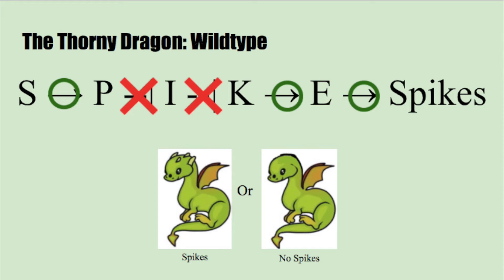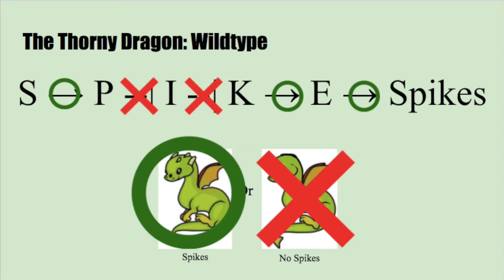Now we can take a look at our wild type. We have an S gene activating P, and then P inhibits I. I also inhibits K, and K activates E, giving us the wild type thorny dragon with spikes.